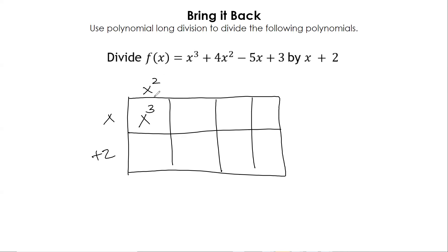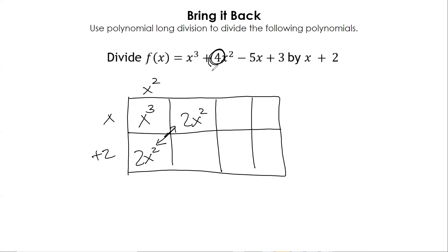x squared — and then x squared times what's out here, which is two, gives us 2x squared. Now here's where everybody starts having issues: we're going to add on the diagonal. The reason why is because it has to add up to equal the number in the problem.